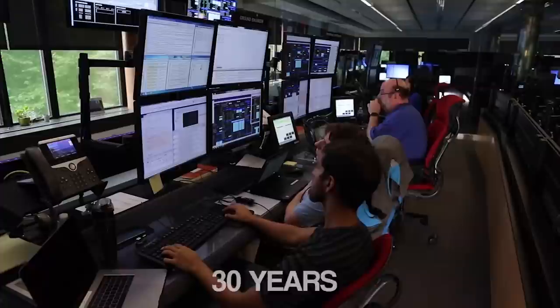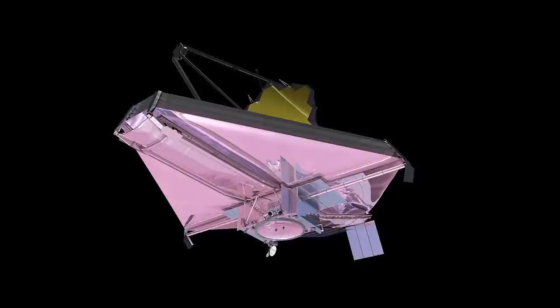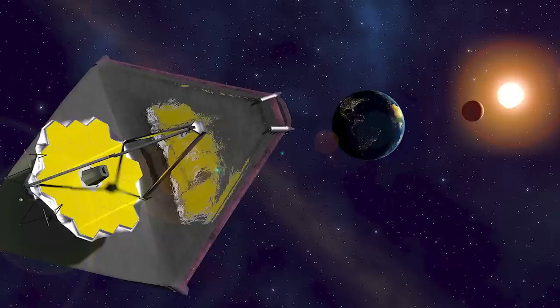After about 30 years and $9.7 billion, the project was completed and named for the second administrator of NASA, James E. Webb, who presided over the Apollo missions and made sure that NASA focused on scientific research beyond just rocket technologies. The James Webb Space Telescope was launched on Christmas Day of 2021 and has since traveled over 930,000 miles away from Earth, situating itself in orbit about 3,000 times farther away than Hubble.